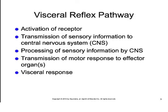In a visceral reflex pathway, we see some of the same components as in a normal reflex pathway: activation of a receptor, transmission of sensory information to the CNS, which is processed primarily by the brainstem and the hypothalamus, and then motor commands sent to effector organs. An example is regulation of blood pressure through the baroreceptor reflex. A sudden decrease in blood pressure activates baroreceptors in the aortic and carotid bodies. Sensory nerves carry the impulse to the medulla oblongata, which determines that blood pressure is too low and sends motor signals to the heart to speed up and to smooth muscle in blood vessels to increase vasoconstriction, promoting an increase in overall blood pressure.